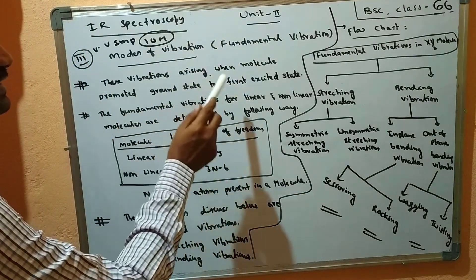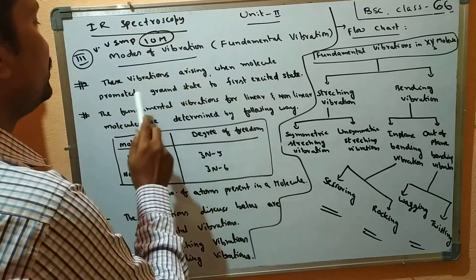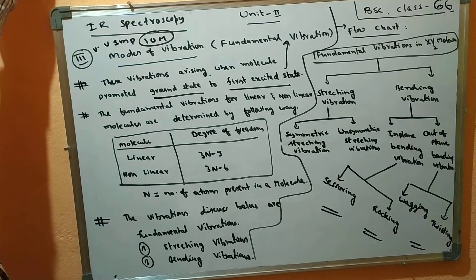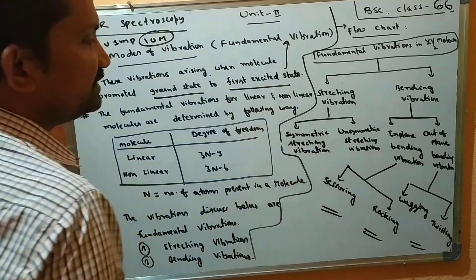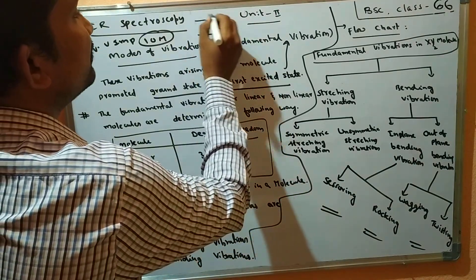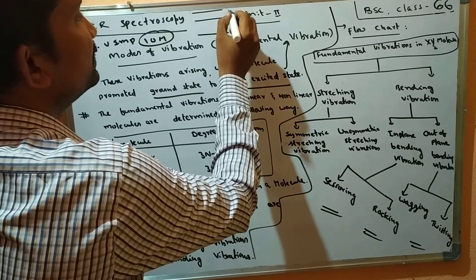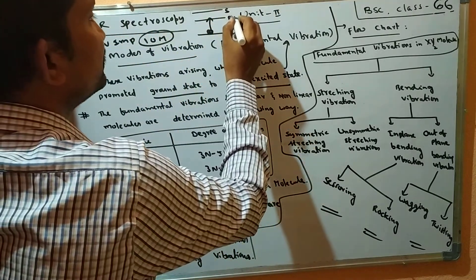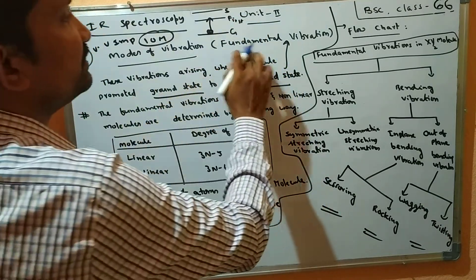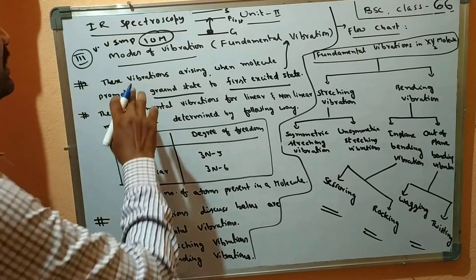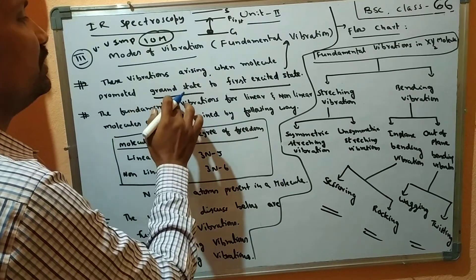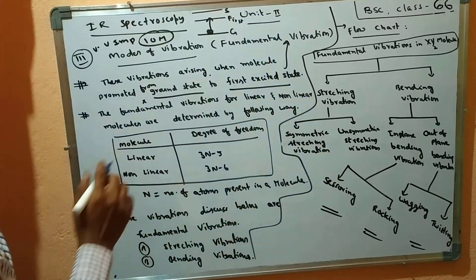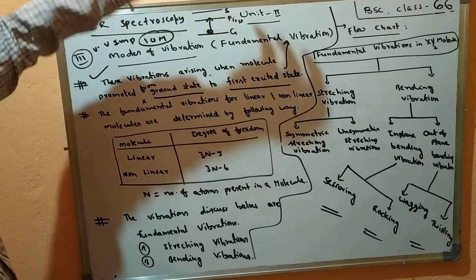The vibrations arise when molecules are promoted from the ground state to the first excited state — that is the fundamental vibration. If the molecule has multiple energy levels, the ground level to the first excited state transition is what defines fundamental vibrations.